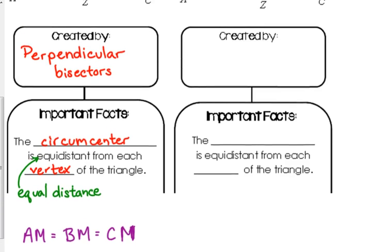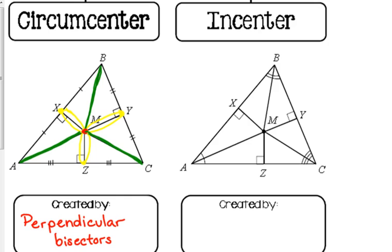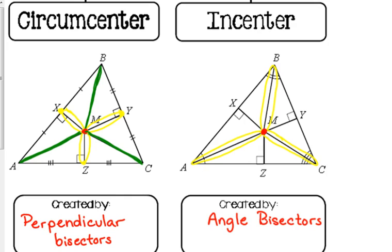Another center we have is called the incenter. The incenter is created by the angle bisectors. You can see on your paper that angle A is cut in half, angle B is cut in half, and angle C is cut in half. Where they all meet at that point M is what we call the incenter.